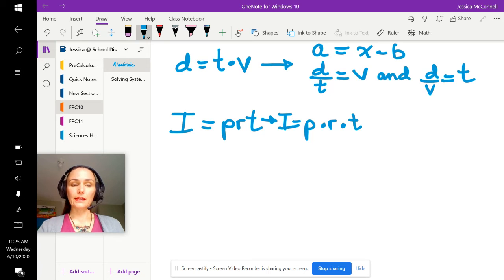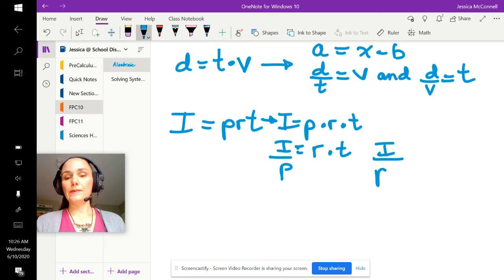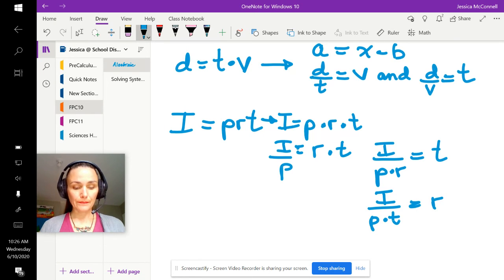I can isolate p, r, or t using division. So I could say I divided by p is r times t - that would be an intermediate step. I could divide the I by p and r and isolate just the time. I could divide the interest by principle and time and that would give me the rate, et cetera, et cetera.